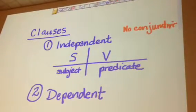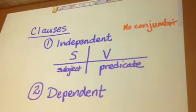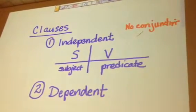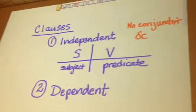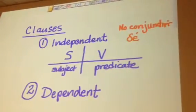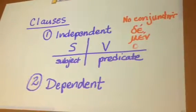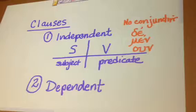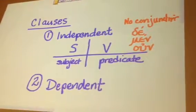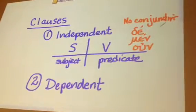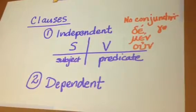Or they will have what we call post-positive conjunctions, and you have seen some of these already, I think, but there's de, and there's men, and there's un. If you haven't learned these yet, that's fine, you're going to learn them very shortly, and gar, and there's a few others that you'll have.